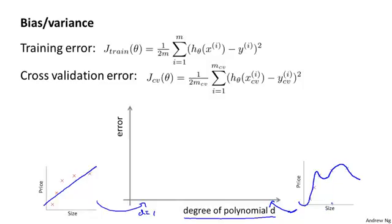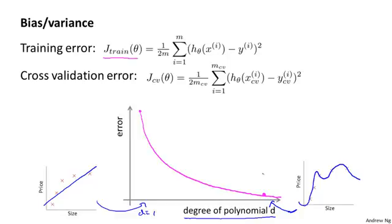Let's look at the training error and cross-validation error and plot them on this figure. As we increase the degree of the polynomial, we're going to be able to fit our training set better and better. So if d equals one, we'll have a relatively high training error. If we have a very high degree polynomial, our training error is going to be really low — maybe even zero. So as we increase the degree of the polynomial, the training error typically decreases.